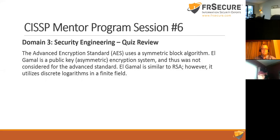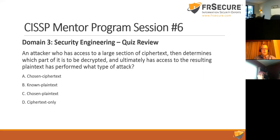Question ten: An attacker with access to a large section of ciphertext determines which part to decrypt and gains access to the resulting plaintext. What type of attack is this? Options: chosen ciphertext, known plaintext, chosen plaintext, or ciphertext only. Since the attacker chooses which ciphertext to decrypt, the answer is A — chosen ciphertext attack.